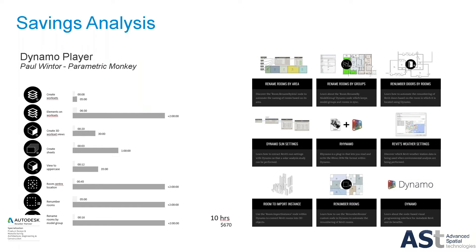On the documentation side, we've got Dynamo Player. Paul Winter from Parametric Monkey has numerous scripts that work with our platforms. These work with Dynamo Player to automate things like putting elements on worksets, renumbering rooms, and renaming rooms by model group. He even has the amount of time each script can save you and a dollar figure assigned to that. By using these scripts, you can automate mundane tasks, be more efficient, and make more profit margin.